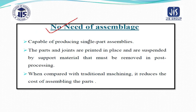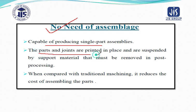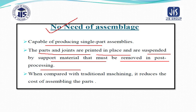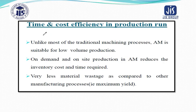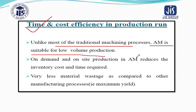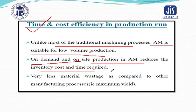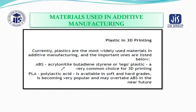No need for assemblage: because you are doing an additive process, any complex shape can be produced, so assemblage is not required. The process is capable of producing single-part assemblies — parts and joints are printed in place and suspended by support material that must be removed in post-processing. When compared with traditional machining, this reduces the cost of assembling parts. Regarding time and cost efficiency in production: additive manufacturing is suitable for low-volume, on-demand, on-site production and reduces inventory cost and time required, with very less material wastage compared to other manufacturing processes.